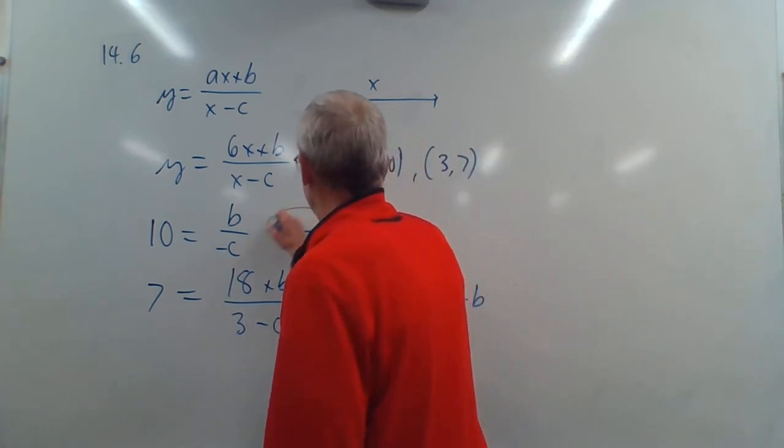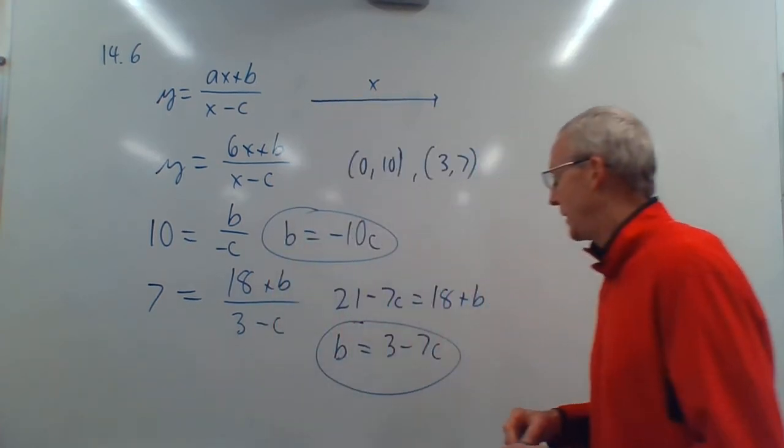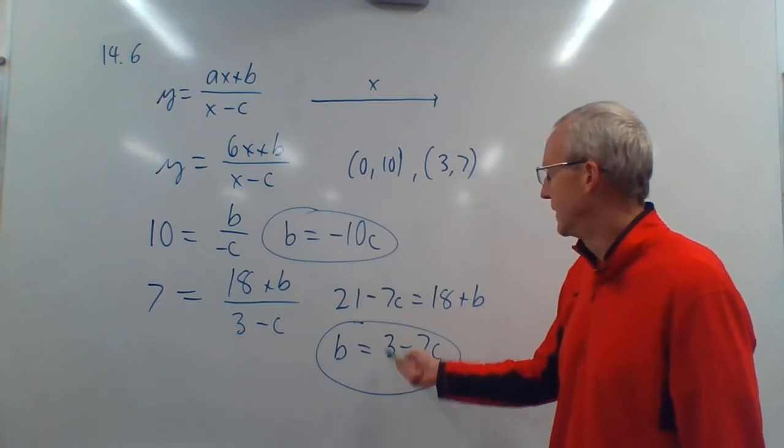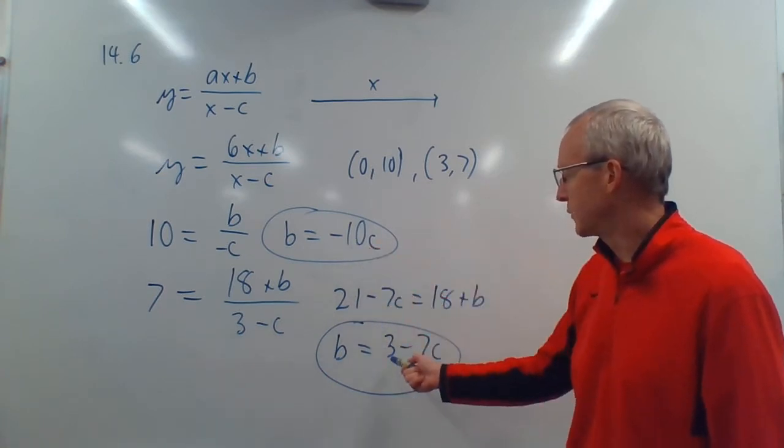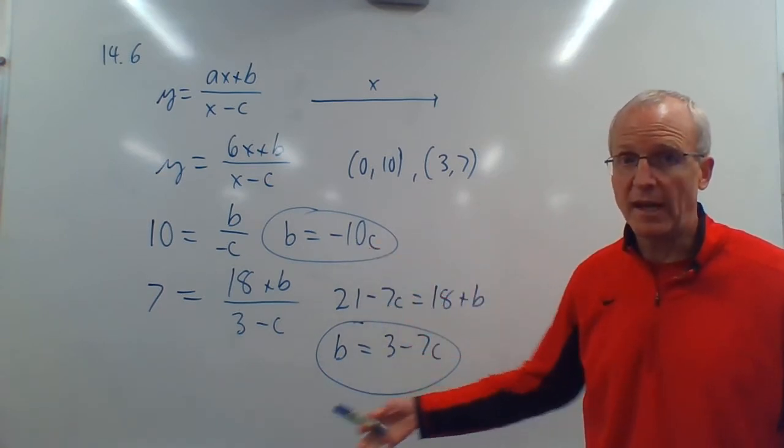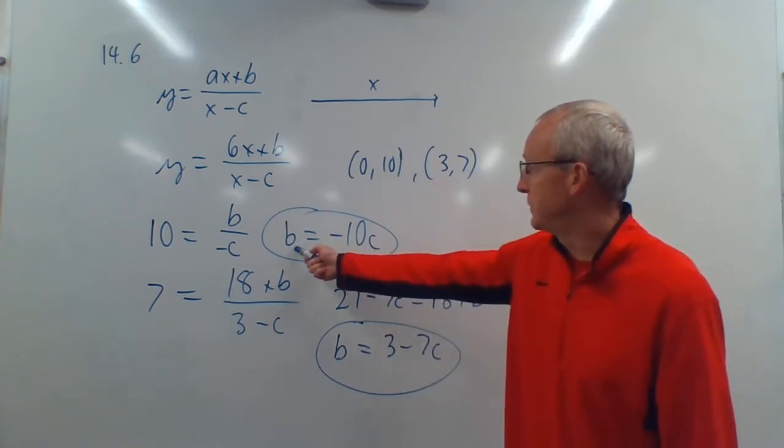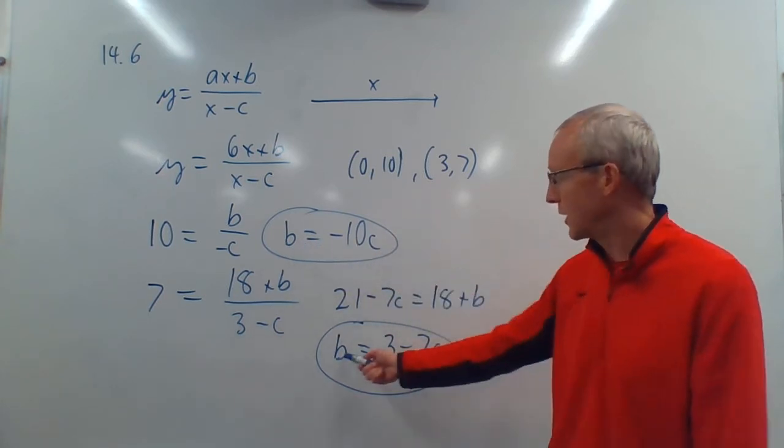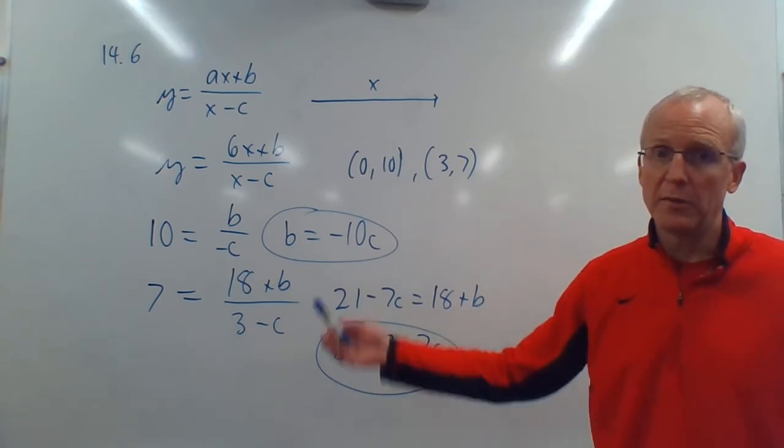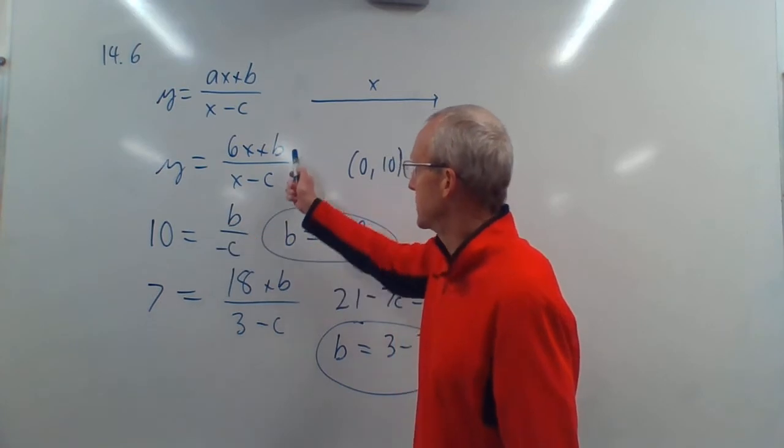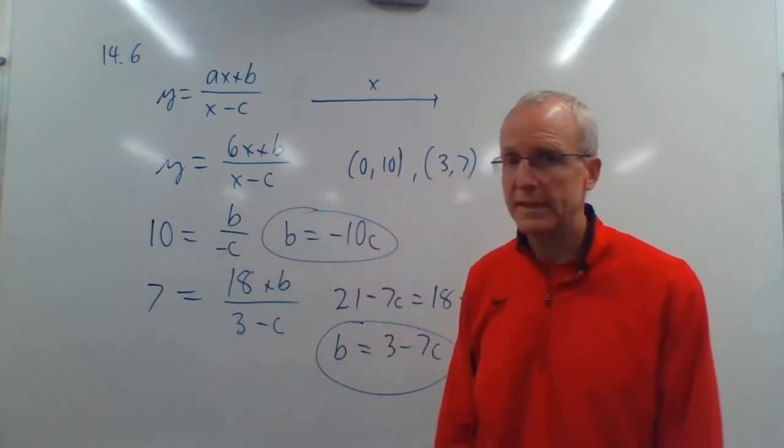So now we have two equations. All you got to do now is set B equal to B, set negative 10C equal to 3 minus 7C, solve for C, and then you'll know what C is. And if you know what C is, you know that B is just negative 10 times C, or B is 3 minus 7C. So use both. Check your answer.